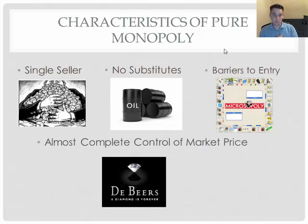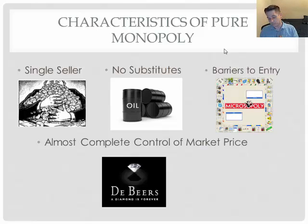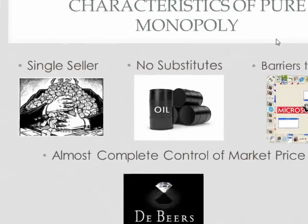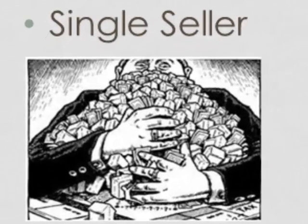Characteristics of a pure monopoly — the government tries very hard to stop these because they're terrible for buyers. First, a single seller controls everything: factors of production, land and labor, capital, entrepreneurship, and market price for whatever they're selling. They have complete control because no one else is forcing them to compete.